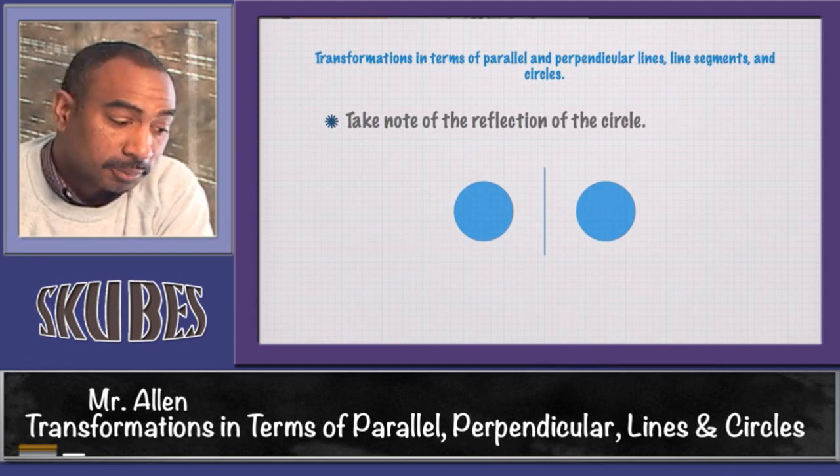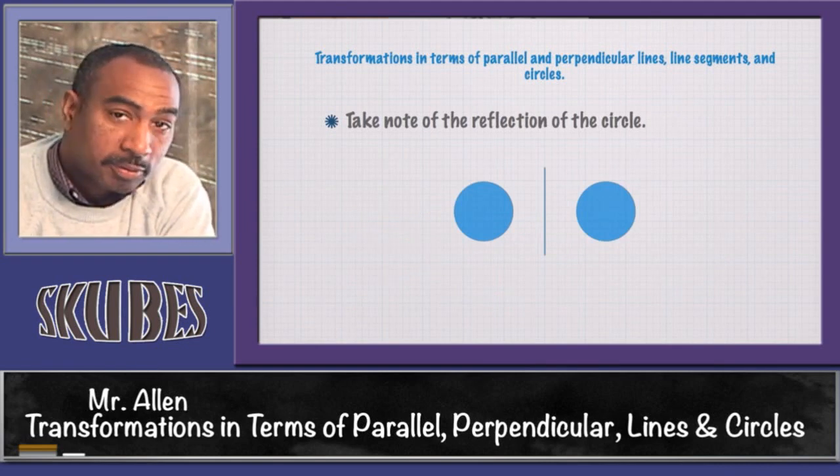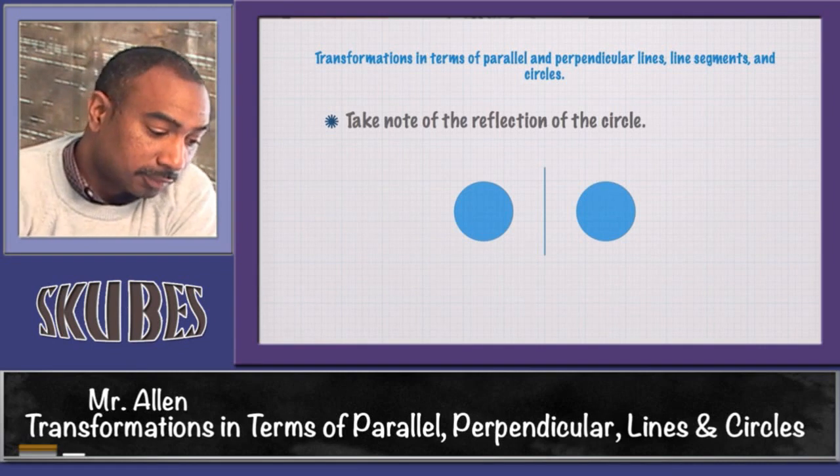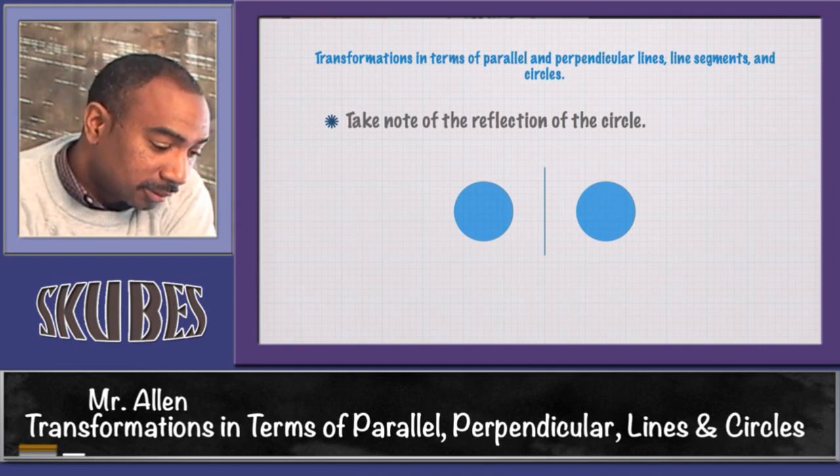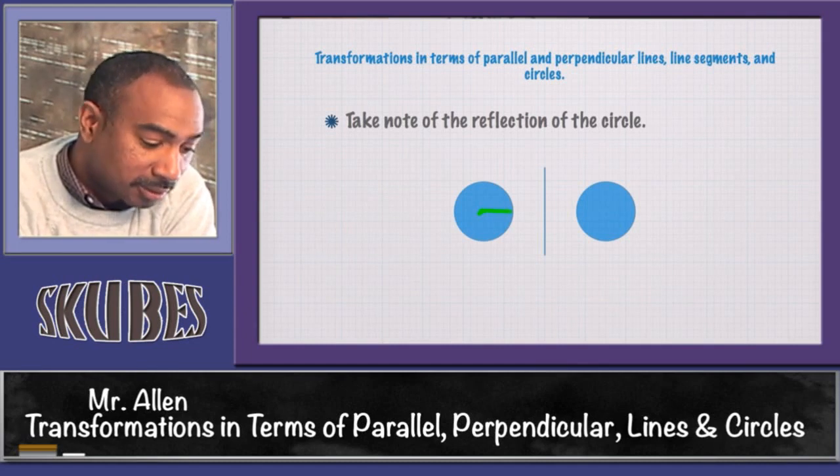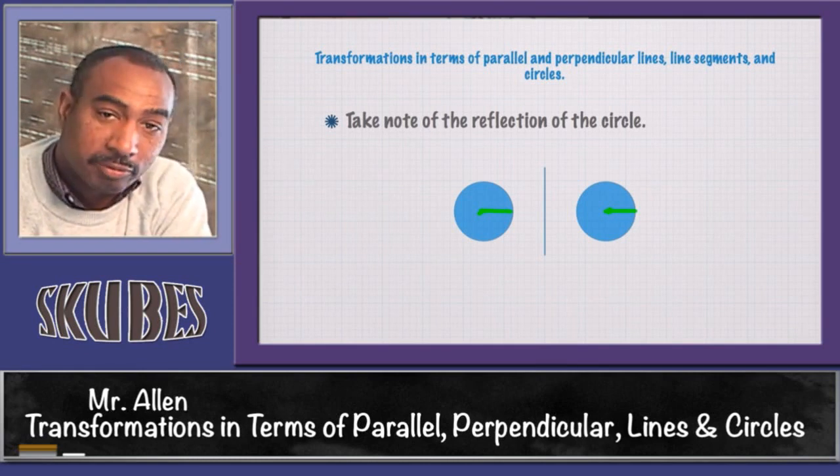Now let's look at the circle. Take note of the reflection of a circle. A circle has no edges. We do have a center and a radius, but that's not going to change, so it's going to be identical if you reflect the circle.